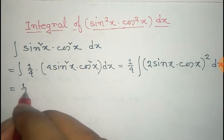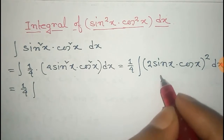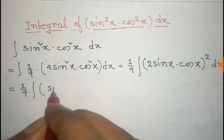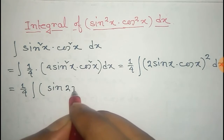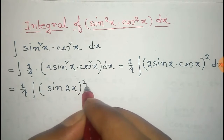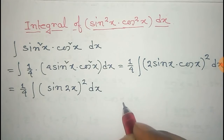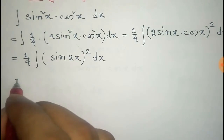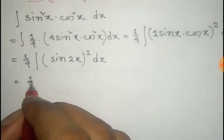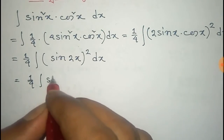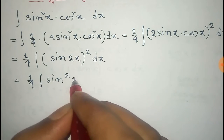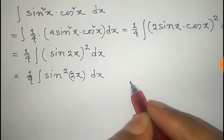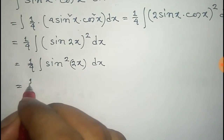That equals to one-fourth integral, and we can write 2sinx · cosx as sin2x, whole squared, dx. So that equals to one-fourth integral of sin²(2x) dx.